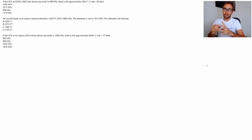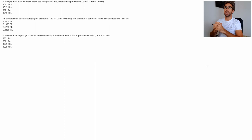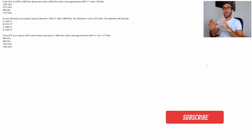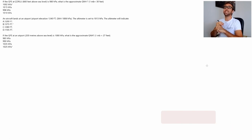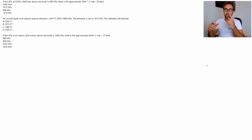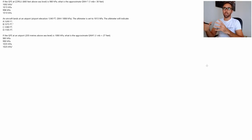Let's have a look at the first one and try to understand the questions and then the answers. The first one says: if the QFE at Corlu, which is an airport somewhere, has got a 660 feet above mean sea level, is 980 hectopascal, what is the approximate QNH? And then it says one millibar equals 30 feet. The first thing is that one millibar equals one hectopascal, so for every hectopascal of pressure difference, we've got 27 feet.